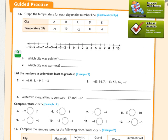Which city was the coldest? That's going to be the smallest number. Just like in the valley, 100 degrees is hot, but 70 degrees is cooler — the smaller number is always going to be cooler. If you have negative 2 and negative 9, both are less than 0. Which one's colder? The one further from 0, which is the smaller number. So City A was the coldest, and City B was the warmest — it's the biggest number.